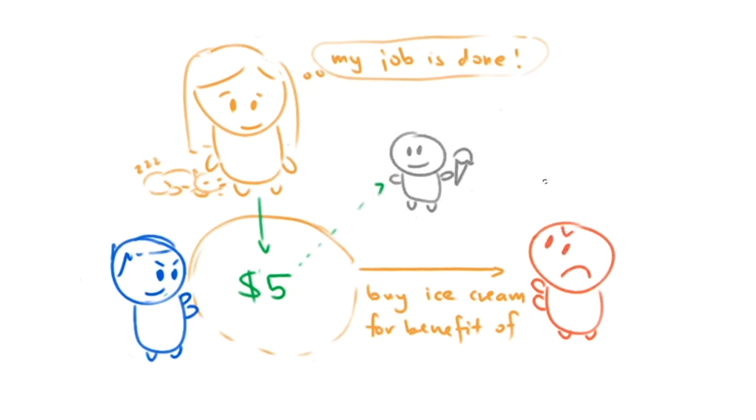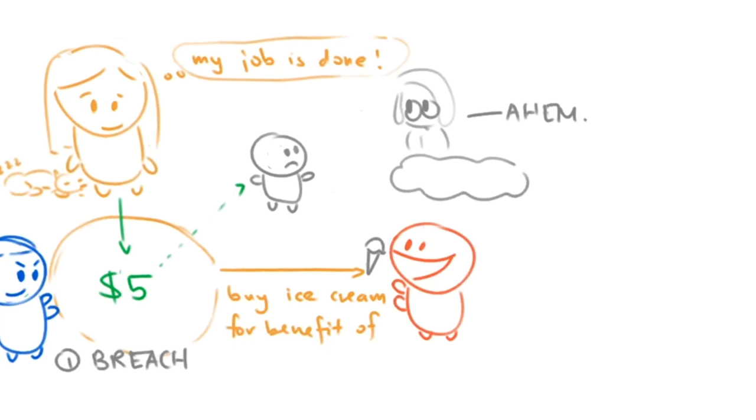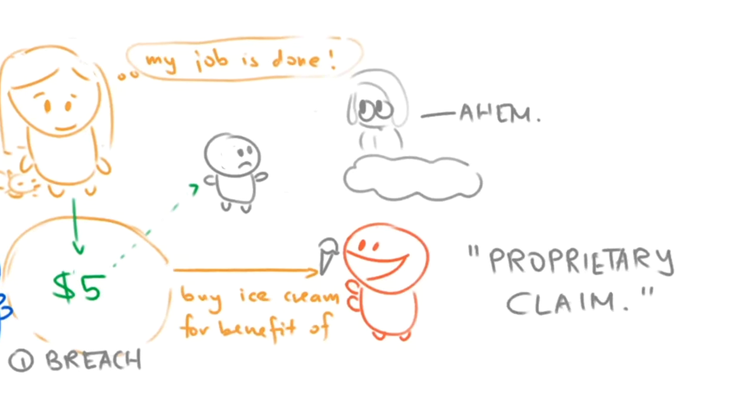I've clearly breached this trust, and the law might let you take the ice cream from my friend because he clearly bought it using Professor Miao's money. We call this the proprietary claim for breach of trust.